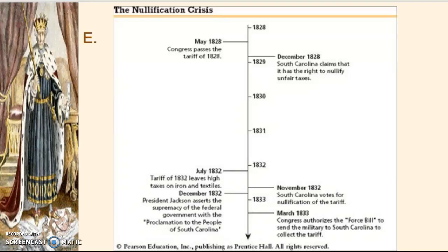This is part two of Andrew Jackson's administration lecture, and we're going to start off with the nullification crisis. There are really two key concepts that you need to understand. One is federal versus state power — it's going to be a huge issue. And the second issue is nationalism.